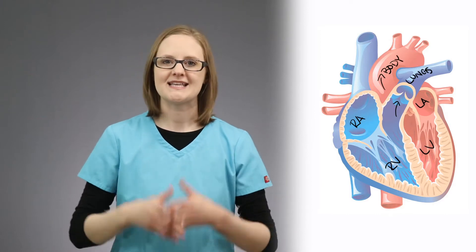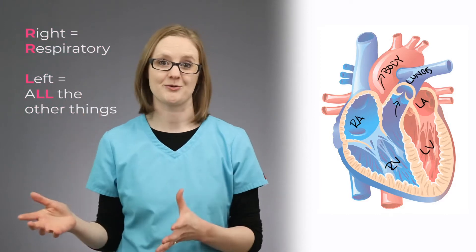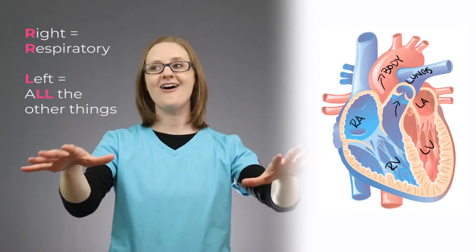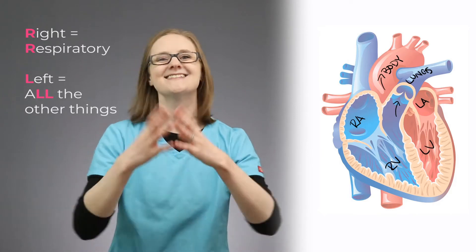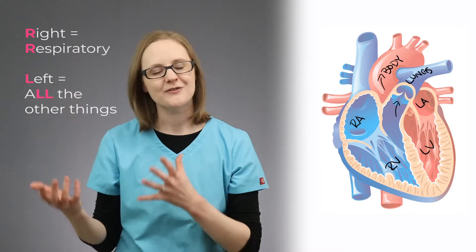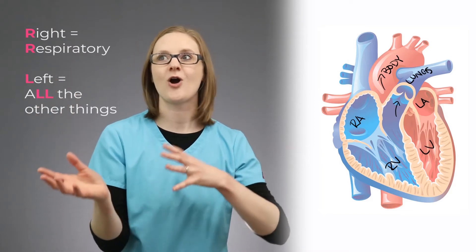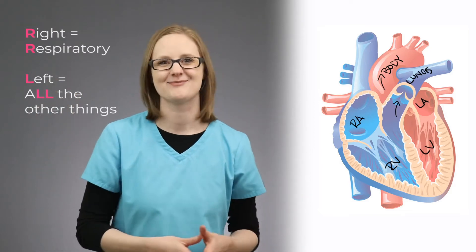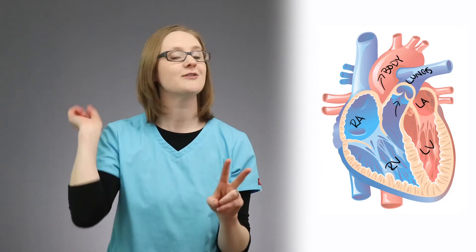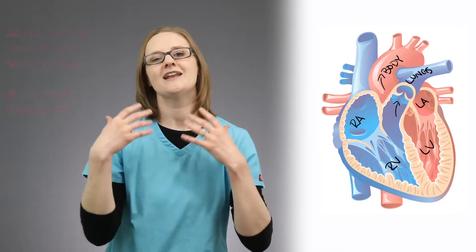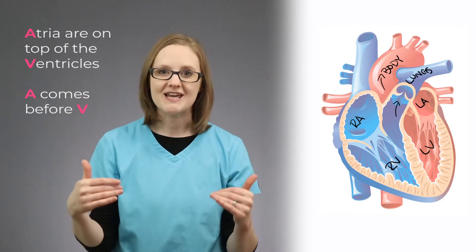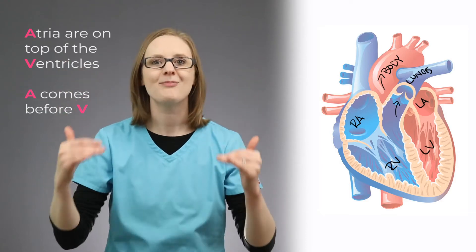To help you remember this, think right for respiratory — R and R — and left, as in L, as in literally ALL the other things. That's how I remember which side pumps blood where. When you think of the heart chambers, you have two atria and two ventricles. The atria are on top of the ventricles, so think A comes before V, so the atria are on top of the ventricles.